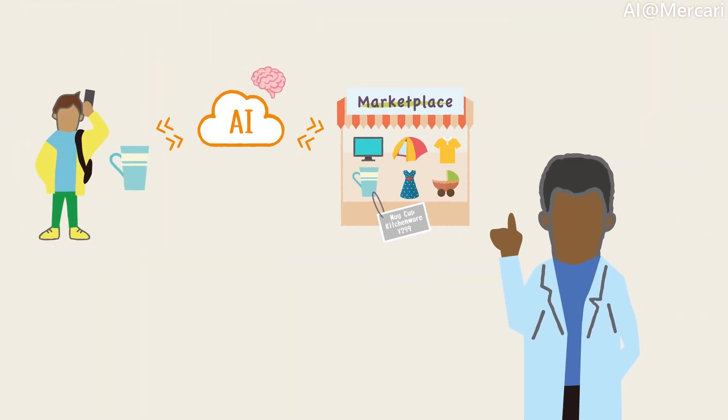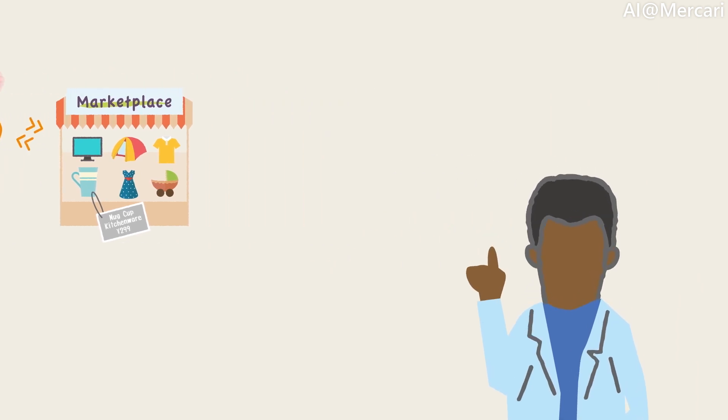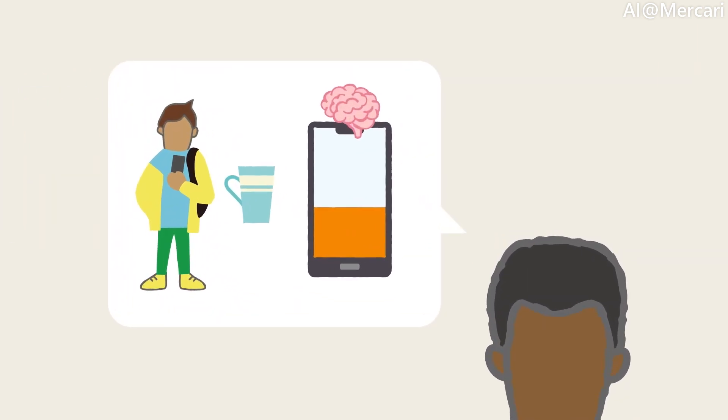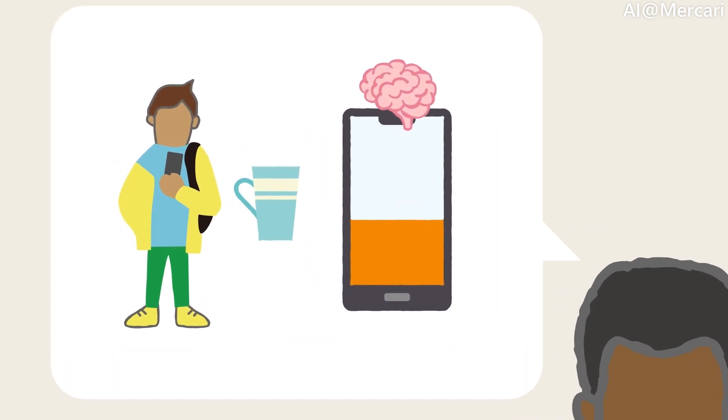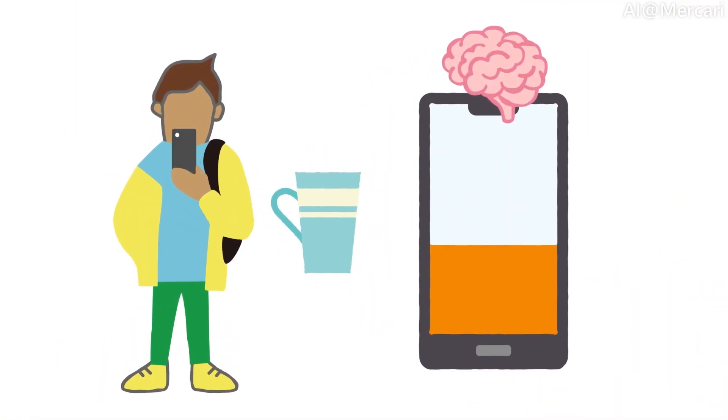This is already an extremely useful tool for potential sellers, but wouldn't it be even better if we could update this process by not having to take the photo? What if all you had to do was start up your smartphone camera, put your item in focus, and then have all the required information appear on your screen?